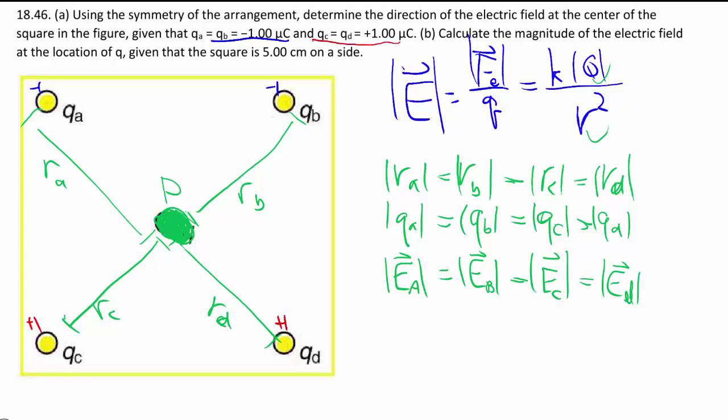But for the direction, they point in all kinds of ways, so it's not necessarily zero. Let's work out the direction. From Qa, a negative charge, all electric field points towards the negative charge. On point P, there's Ea.